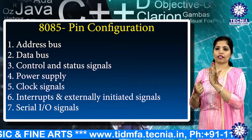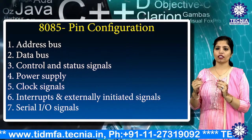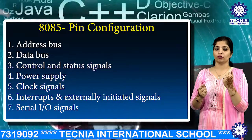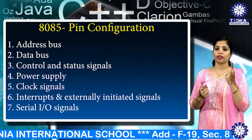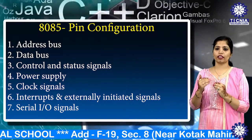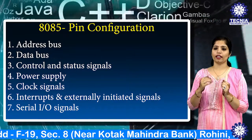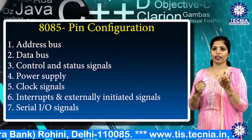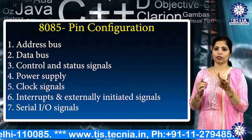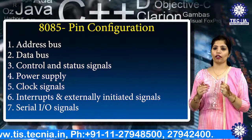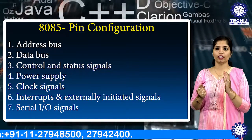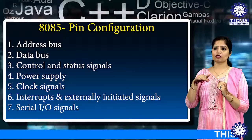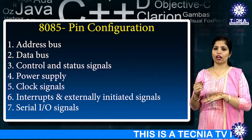The third group is control and status signals, used to identify the nature of operation. There are three control signals: RD (read), WR (write), and ALE. RD indicates the selected I/O or memory device is to be read and is ready to accept data. WR indicates data on the data bus is to be written into a selected memory or I/O location. ALE is a positive-going pulse generated when a new operation is started; when high it indicates address, when low it indicates data.